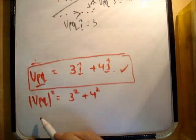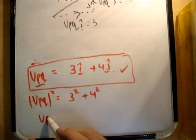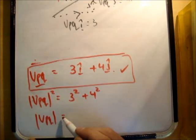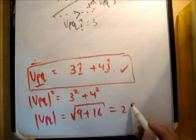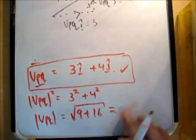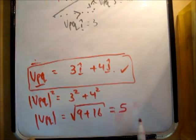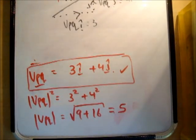Therefore, the magnitude of V, P, Q is equal to the square root of 9 plus 16, which is equal to 25, or equal to 5. So the magnitude of the vector is 5 kilometers per hour, and that is correct.